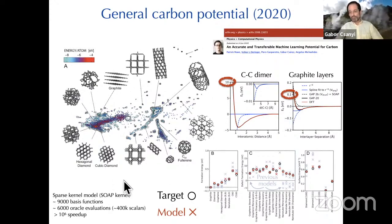With a sparse kernel model, 9,000 basis functions, we take 6,000 oracle evaluations which yields us about 400,000 scalars. We actually achieve this. Here's just a bunch of formation energies for lots of different forms of carbon. The target is the black circle. Our model is the red cross. The light gray crosses are the existing non-machine learned empirical models. This is the power of machine learning.